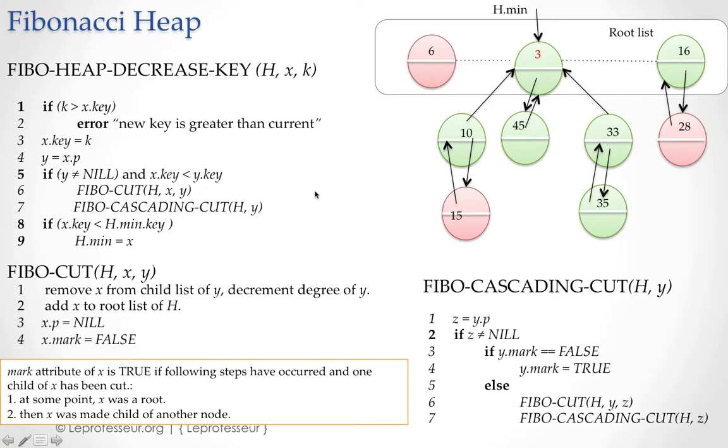If the key which you are reducing, say 15 you are reducing to say 12, and 12 is still bigger than 10, then you don't have to execute this cut procedure. You just simply jump to line number 8. At that line number 8 you want to check whether the new key which you have decreased is less than the root key value or not.